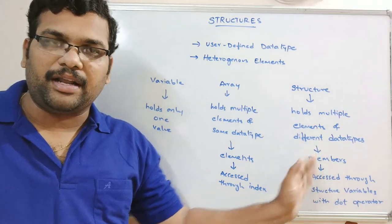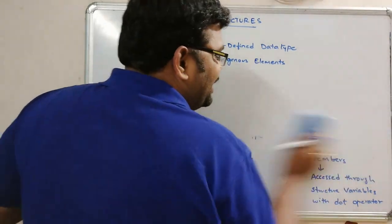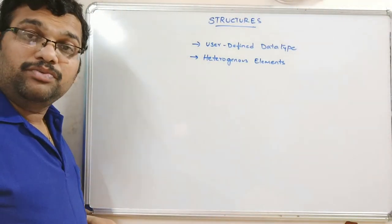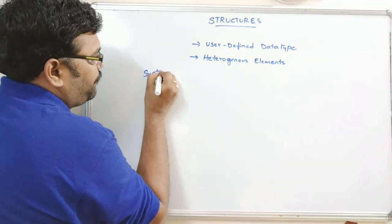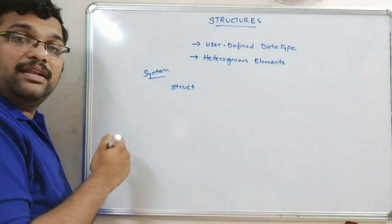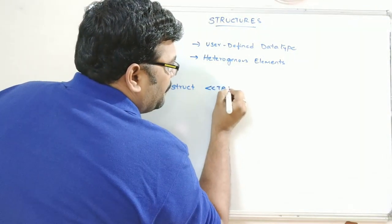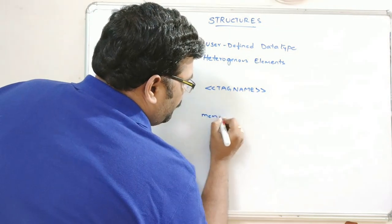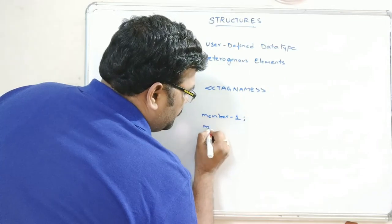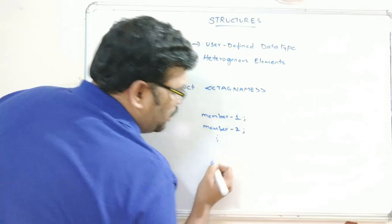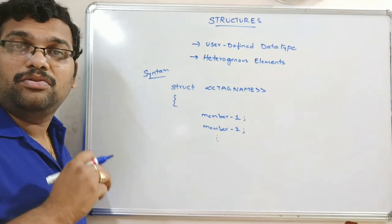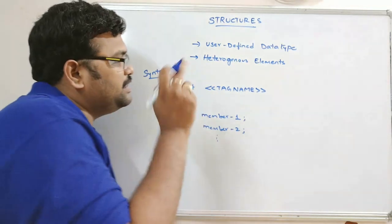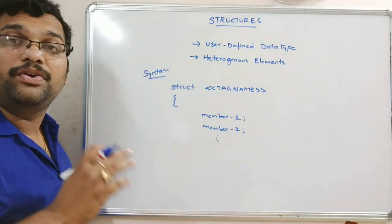Now let's look at the syntax of a structure. First we have to create a structure, then we can declare variables that follow it. The struct keyword is used to declare a structure, followed by a tag name or structure name, then curly braces containing member variables. In C++ we can also define a function inside the structure, which we call a member function — this is not possible in C language.